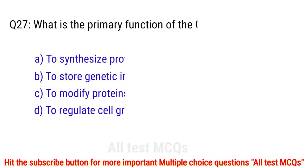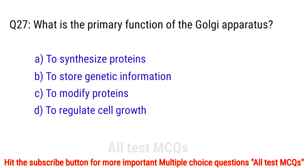Question number 27. What is the primary function of the Golgi apparatus? The right answer is option C: to modify proteins.